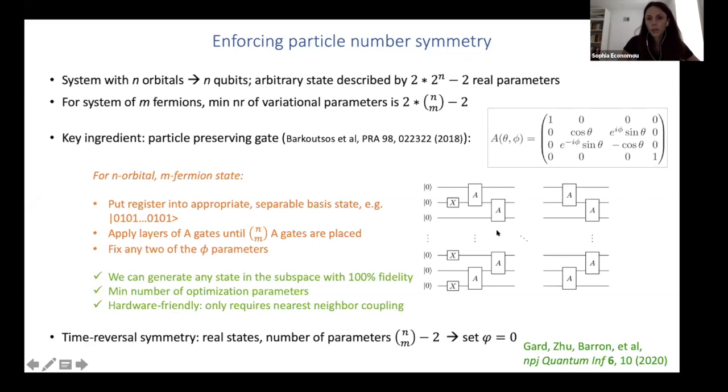And we know exactly when to stop because all we need to do is count parameters. So we've shown that you can hit any target state within the space. We've checked this numerically by checking the fidelity with random states that preserve the symmetry. And in most cases, we also have time reversal symmetry in the system. So that cuts down the parameters even more. So here you have N choose M0 times two.